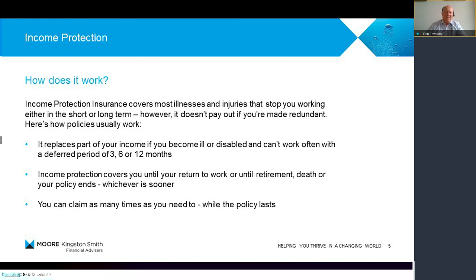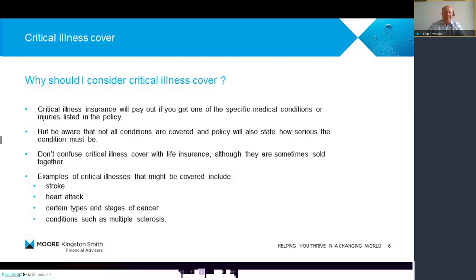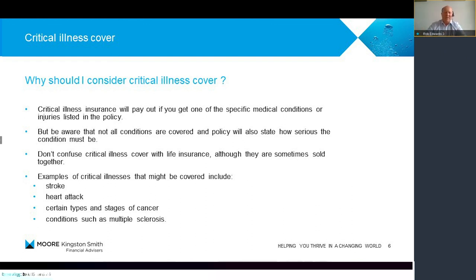You can also claim as many times as you need to — you can claim once, go back to work, and then get paid out again. Now, critical illness cover: this insurance will pay out if you get one of a specified list of medical conditions, and they have to be quite serious. You should be aware that not all conditions are covered — for example, non-invasive skin cancer won't be covered under the policy, but something more serious will be. It should not be confused with life insurance, although often they are sold together, for example with mortgages. It can include a number of the most serious conditions, including stroke, heart attack, MS, motor neurone disease, or other types of cancer.